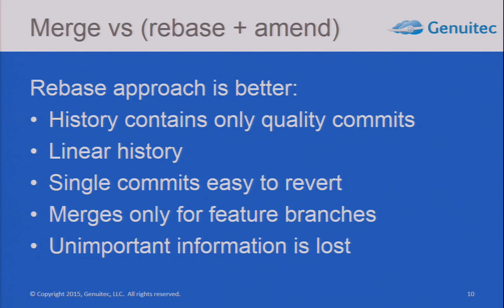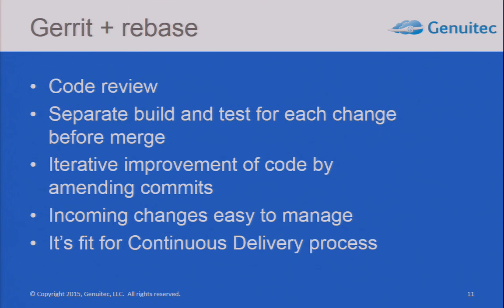That's why my personal preference is rebase and amend. You only merge quality commits — you work on a commit until it's tested, built, and quality. You get a linear history, single commits, easy to revert. Merges are for feature branches because that's information which is required. Feature branches are the things to be merged, not bugfixes. Therefore, some unimportant information is lost.